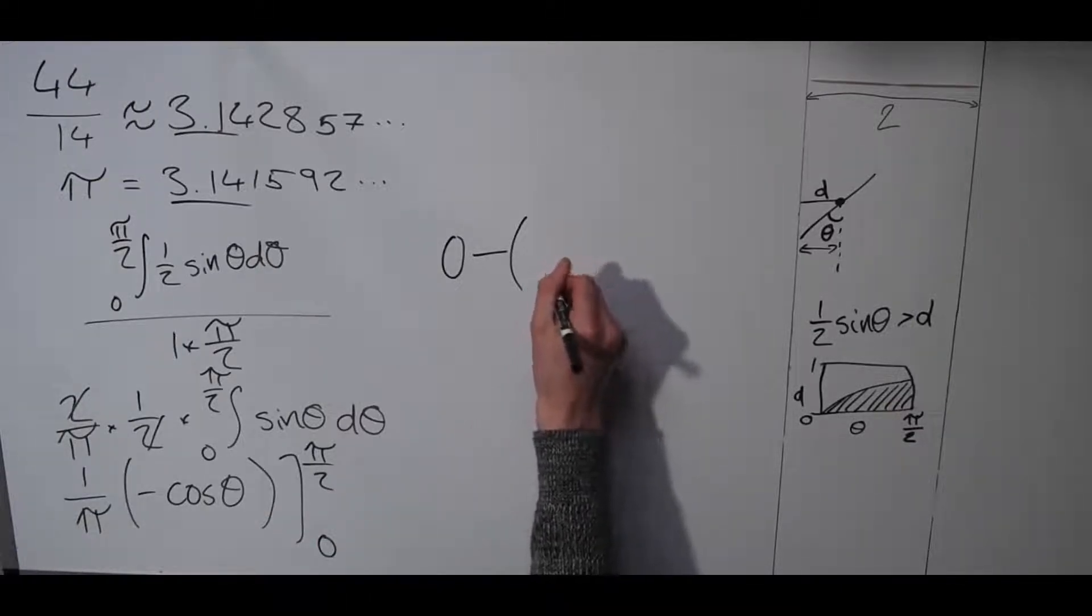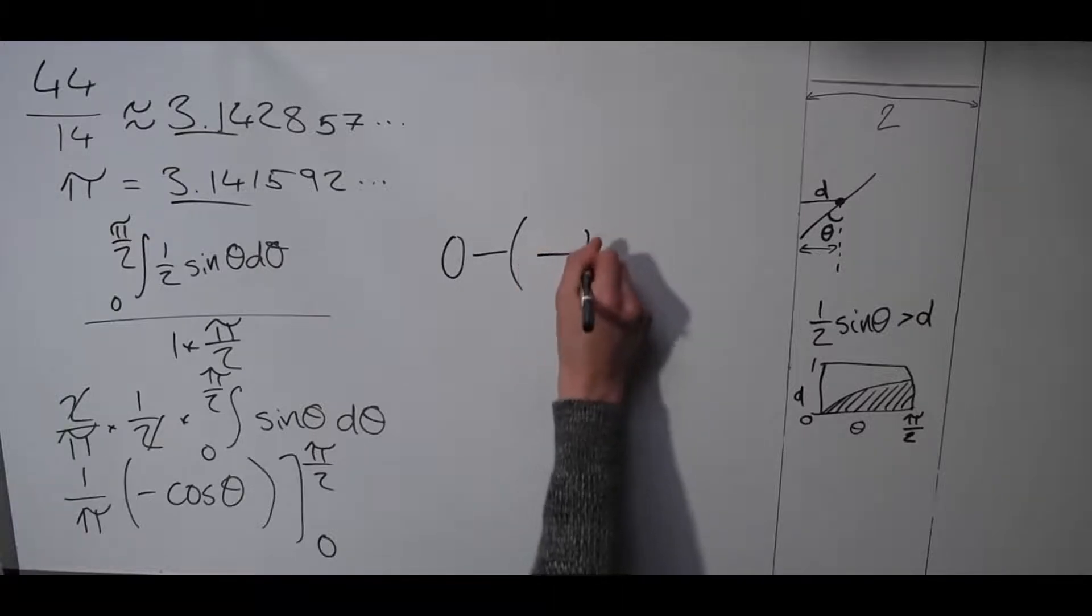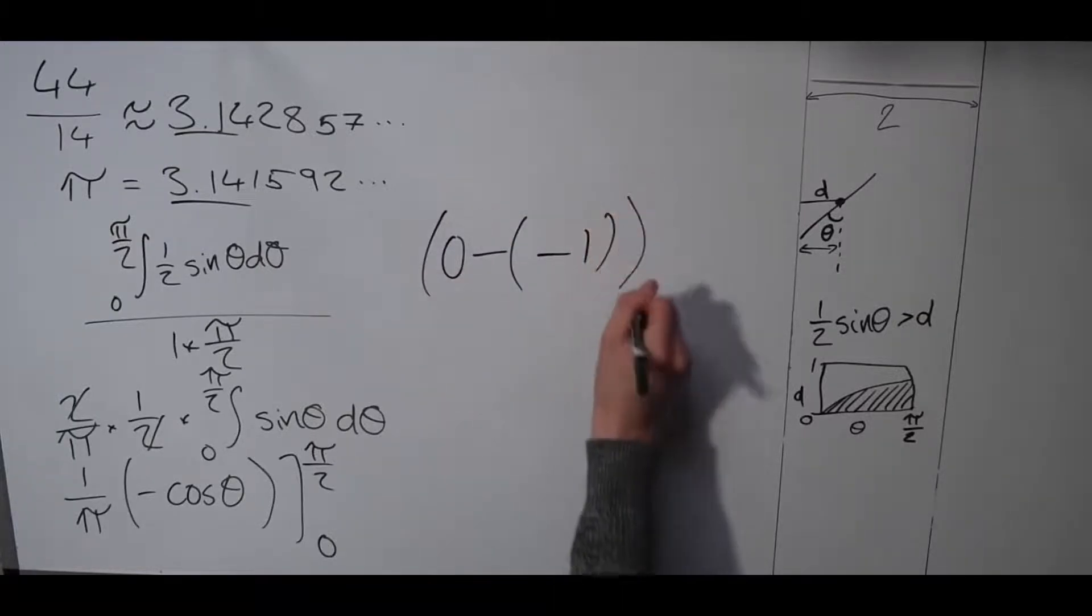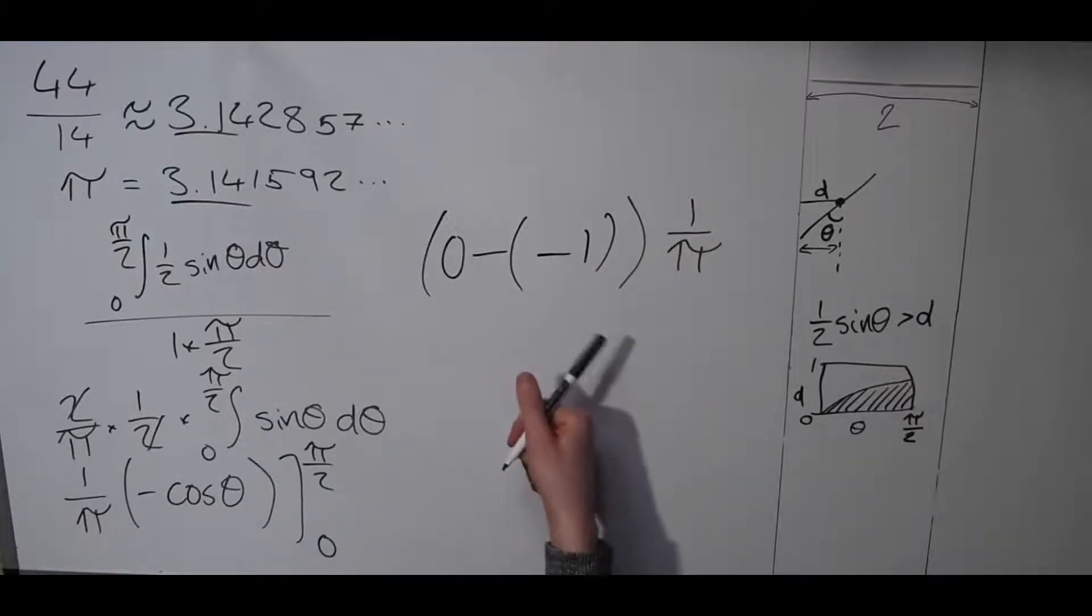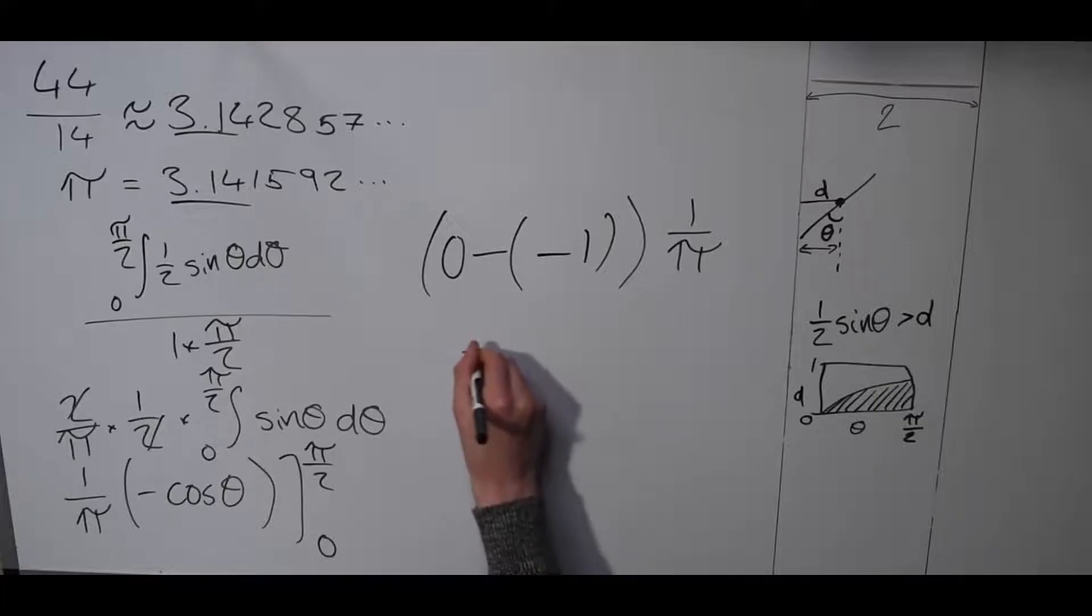So you have zero minus minus one times by one over pi. Minus zero minus minus one is just one, so you're left with one over pi.